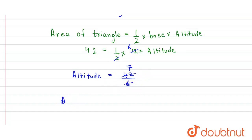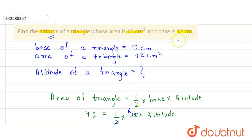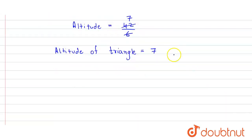So this 6 cancels 42 and we get 7. The altitude of the triangle is equal to 7 centimeter. So we get our answer in centimeter — altitude of a triangle is 7 centimeter. And that's our answer.